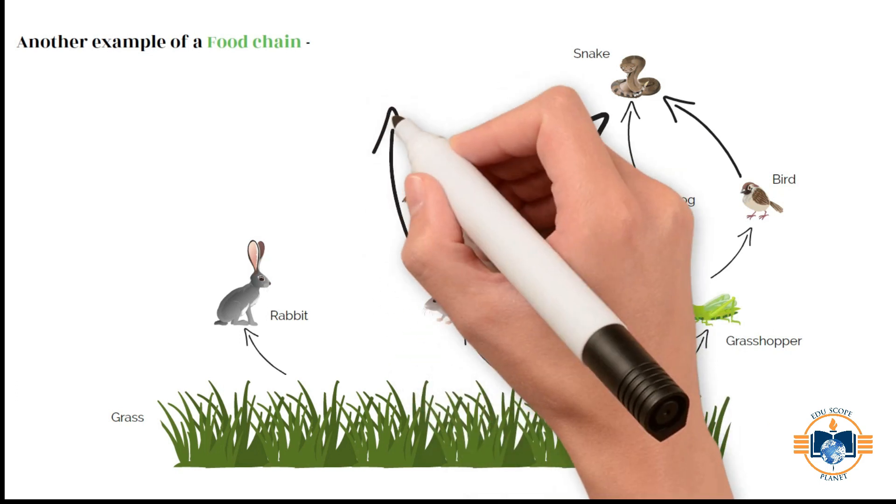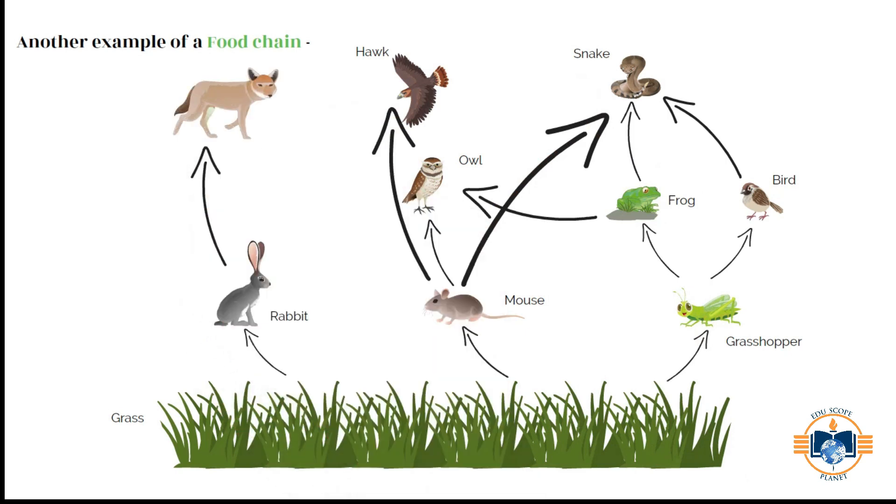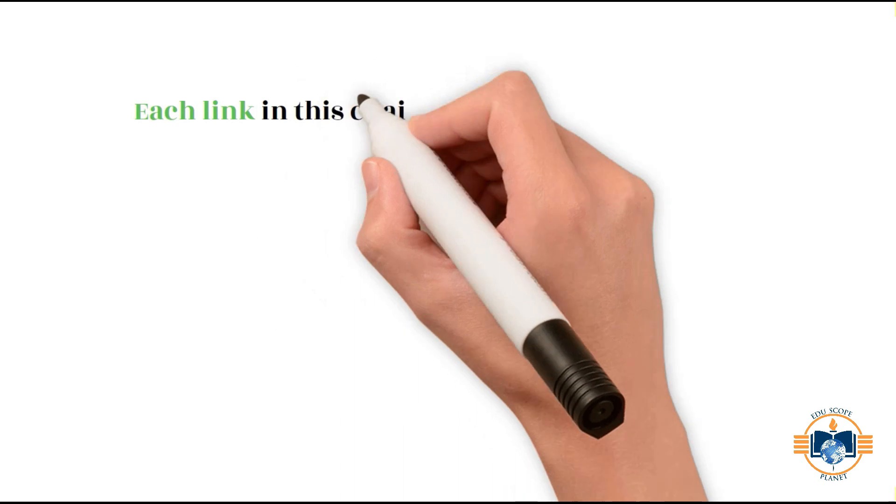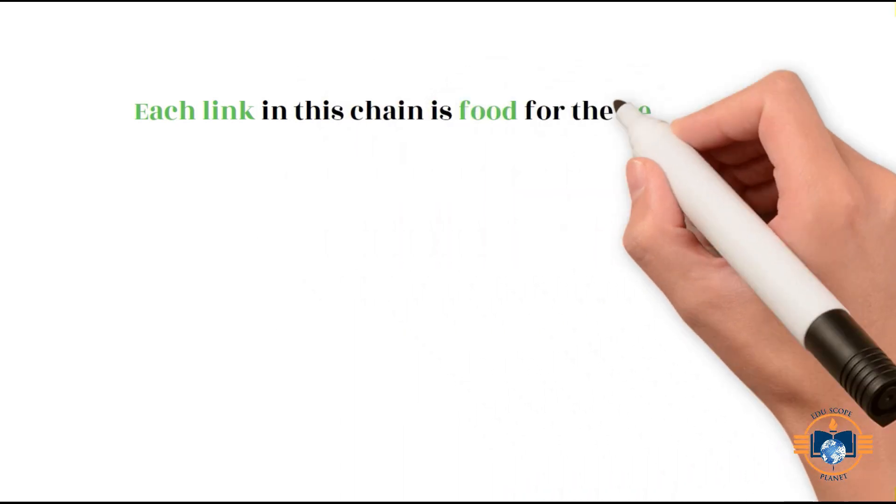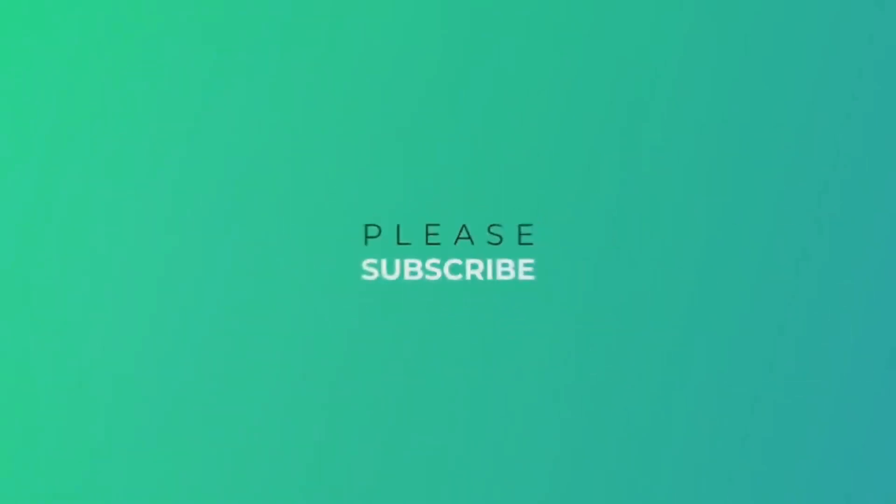Mouse is eaten by hawk also. Rabbit is eaten by fox. Rabbit is also eaten by hawk and wolf. Each link in this chain is food for the next link.